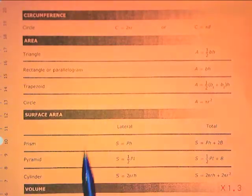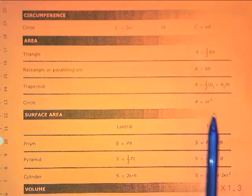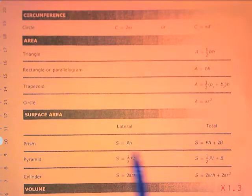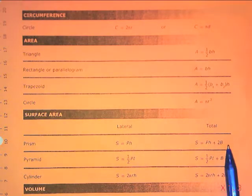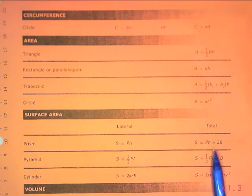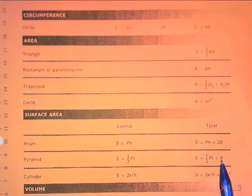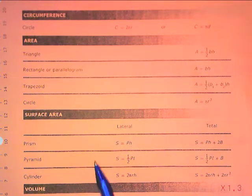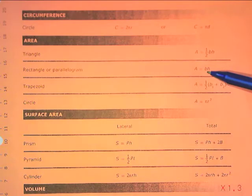The lateral surface area is without the bases. If you look at the column next to it with the total, the only difference is that for the prism, you see it includes two times big B, and for the pyramid, it's the exact same formula except for one B. So we know that the pyramid has one base and the prism has two bases. The capital B in this case is the area of the base.